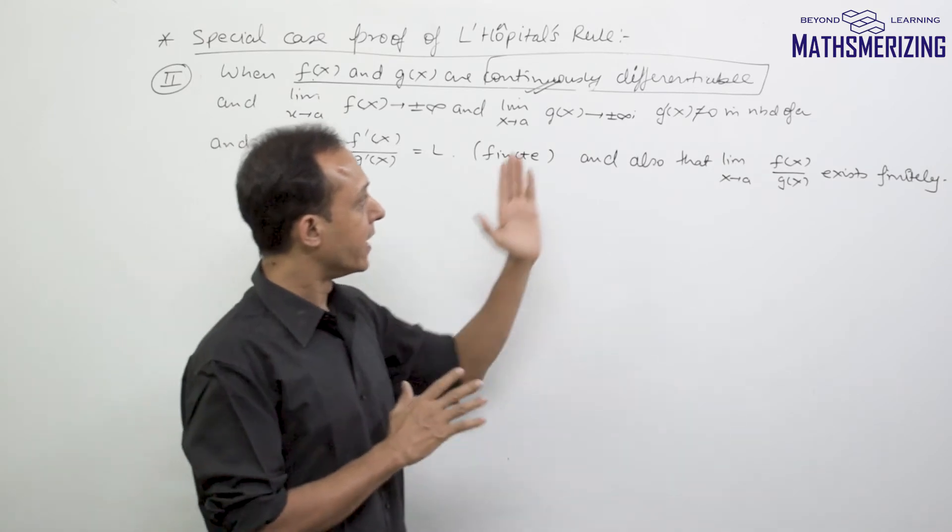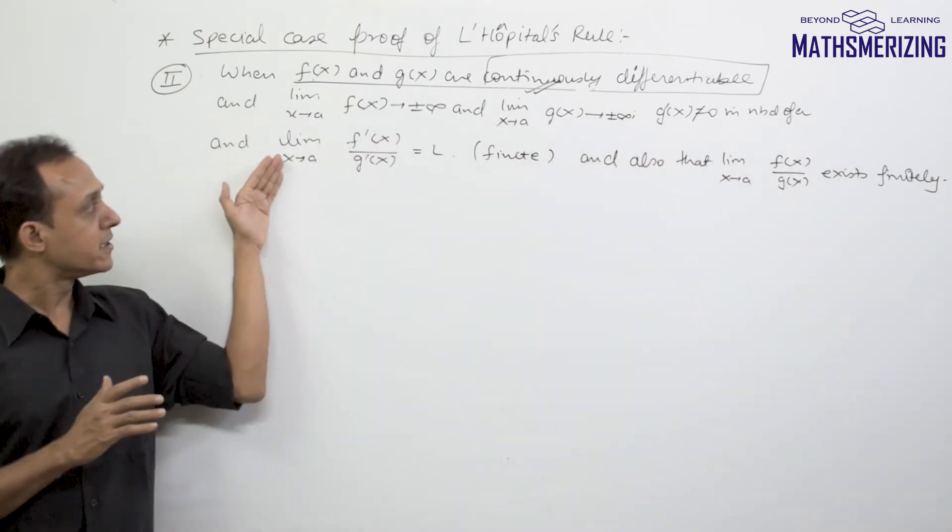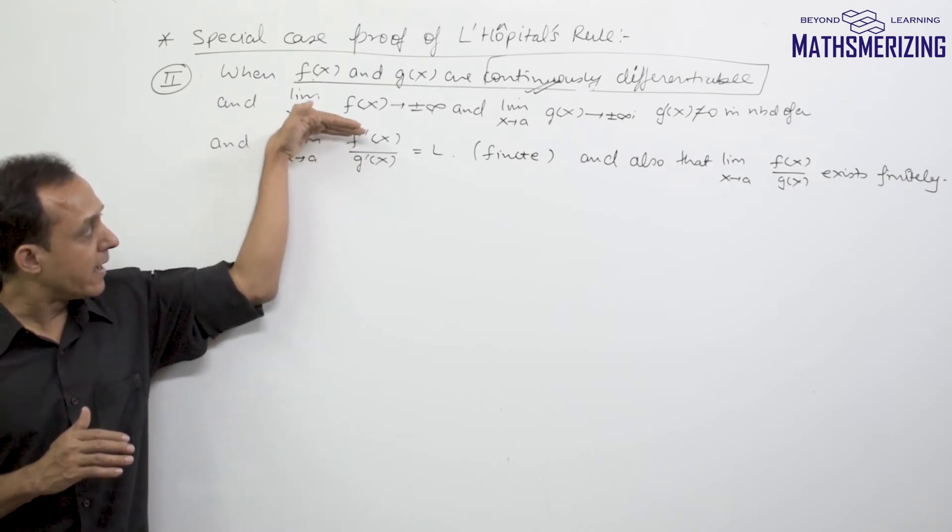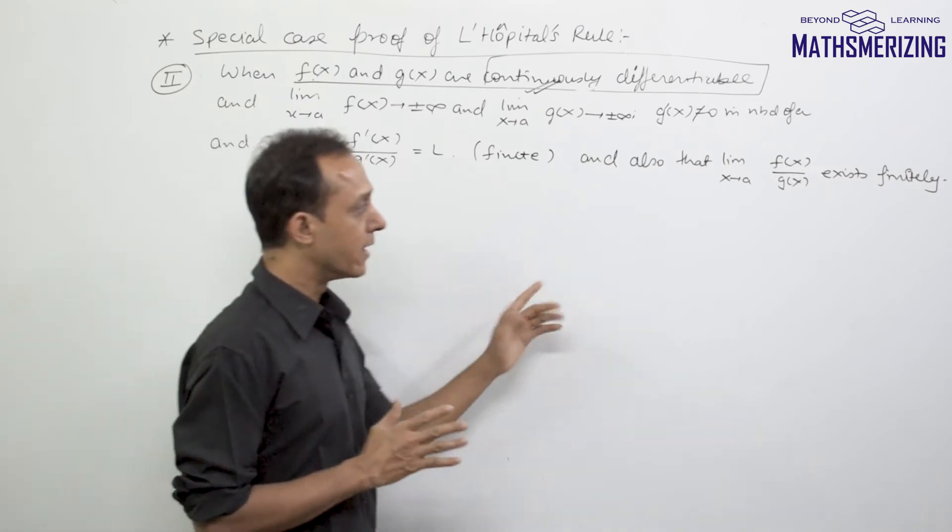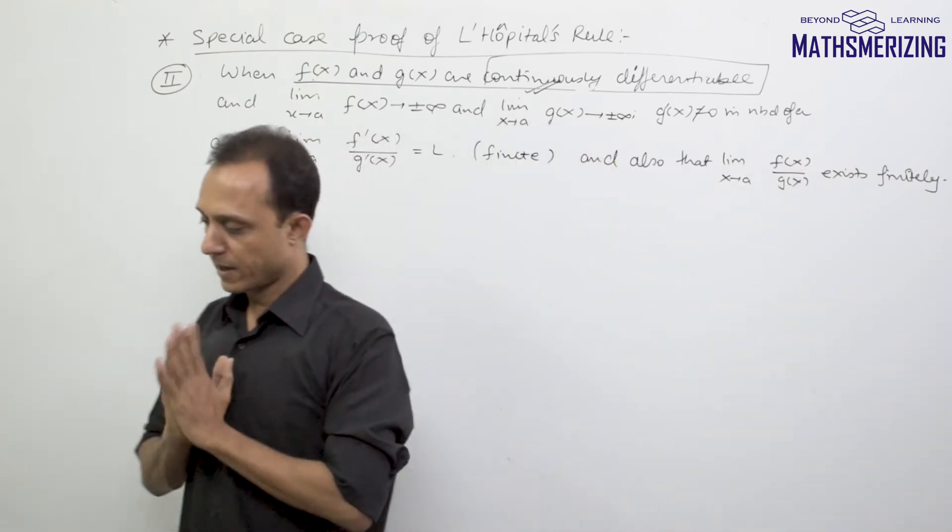G dash x is unequal to 0 in the neighborhood of a, and then limit x tends to a of f'(x) upon g'(x) exists and it exists finitely, and suppose the value is L. And we'll also assume that this limit x tends to a of f(x) upon g(x) also exists finitely.